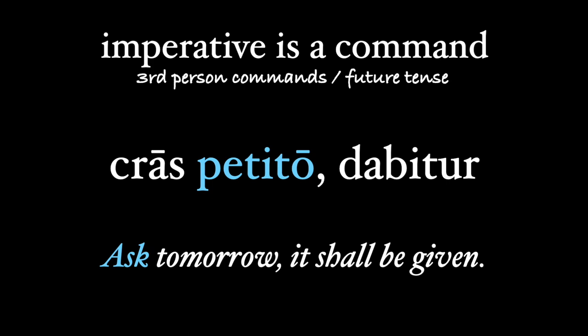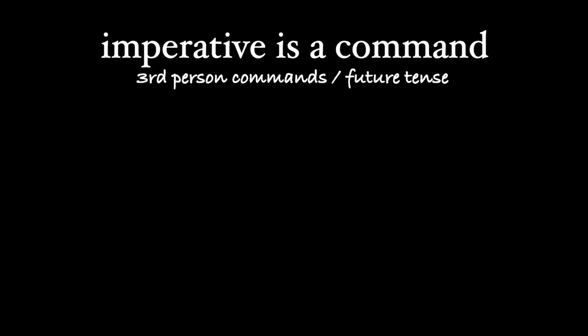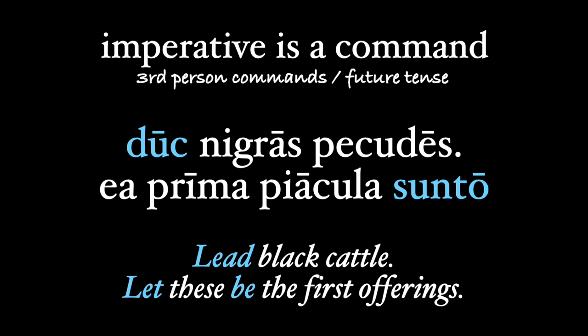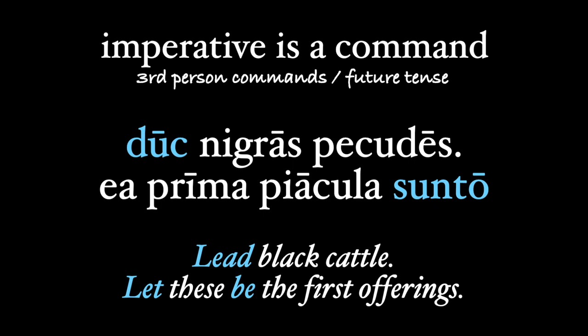The future imperative is also used with general commands. So Virgil has the Sibyl tell Aeneas: 'duc nigras pecudes; ea prima piacula sunto' — 'duc' is one of those irregular imperative forms, meaning 'lead black cattle,' and we don't have a really easy way to render the future third person imperative 'sunto' into English apart from 'let these be the first offerings.'